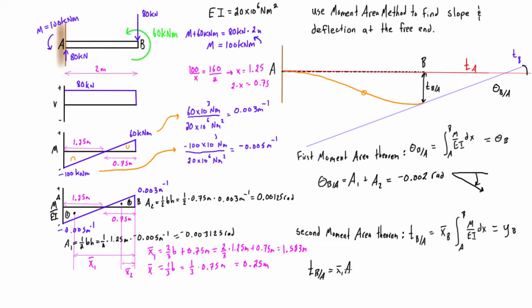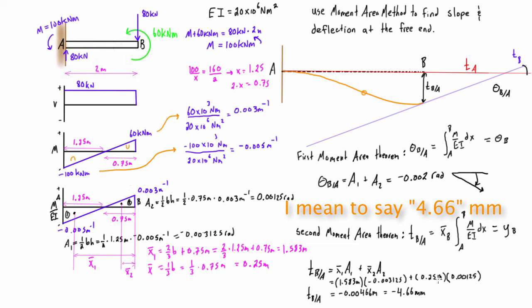By the second moment area theorem, T_B with respect to A equals x-bar 1 times A1 plus x-bar 2 times A2, which gives us negative 4.66 millimeters. This means the tangent of B is about 4.66 millimeters below the tangent of A at point B.